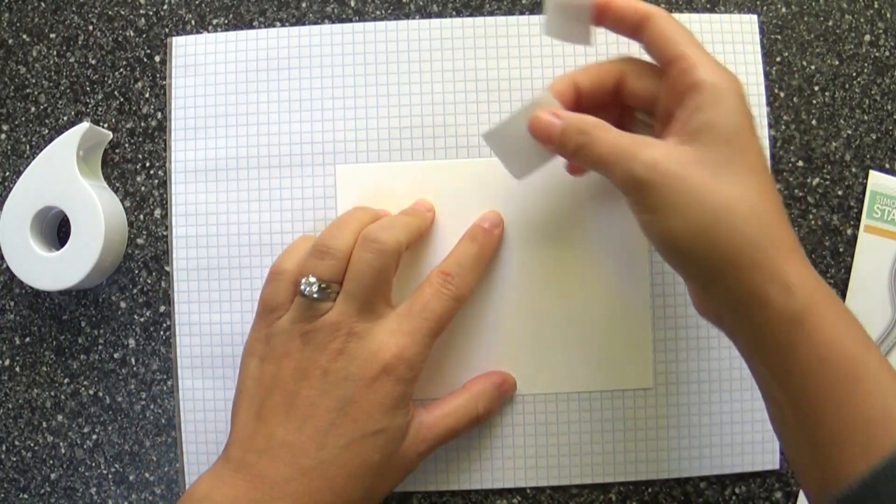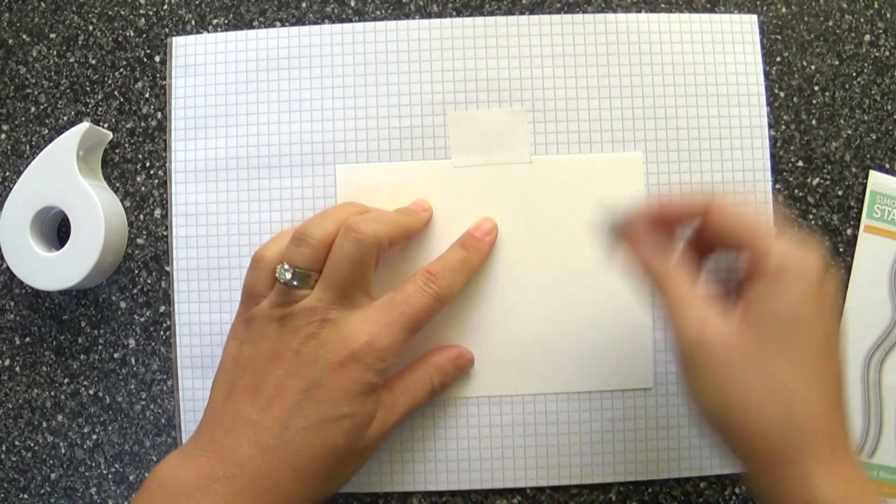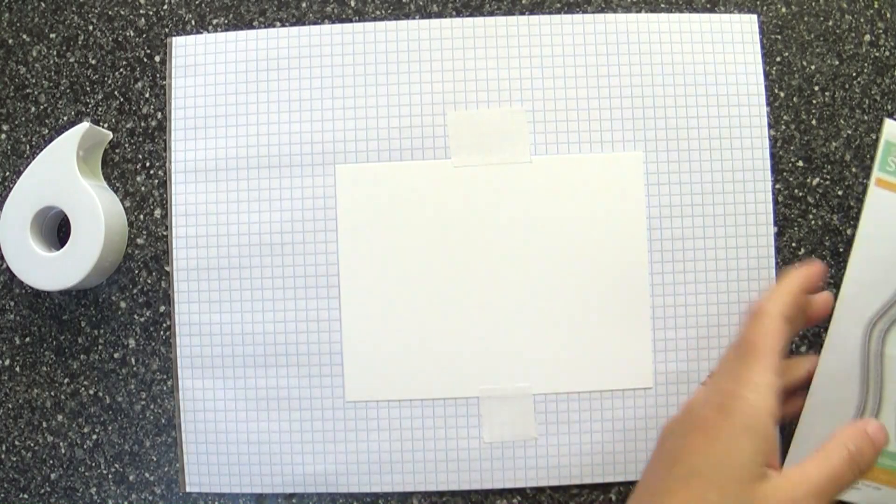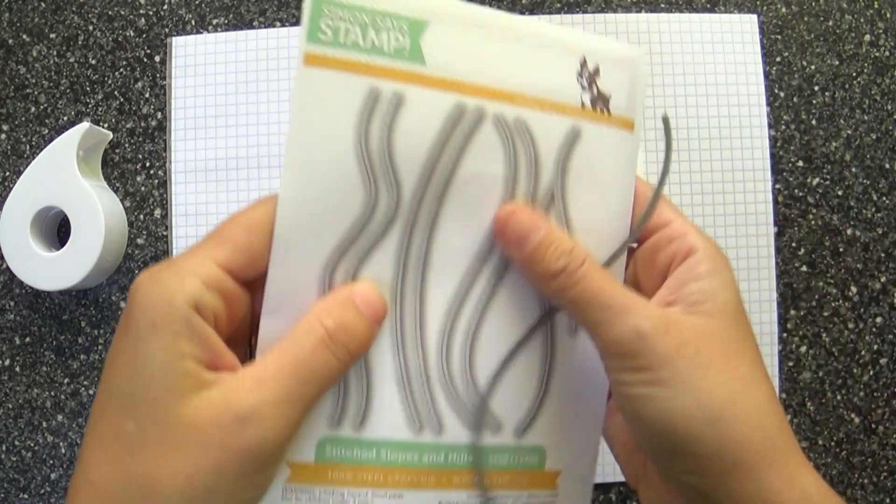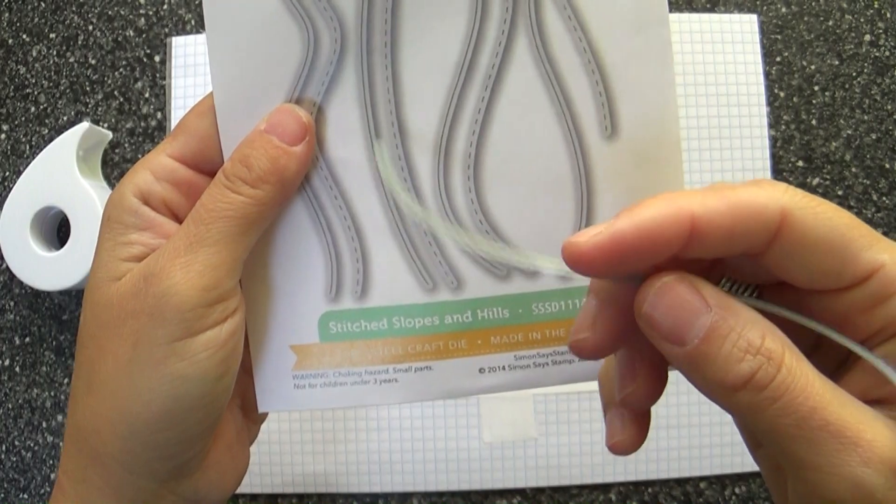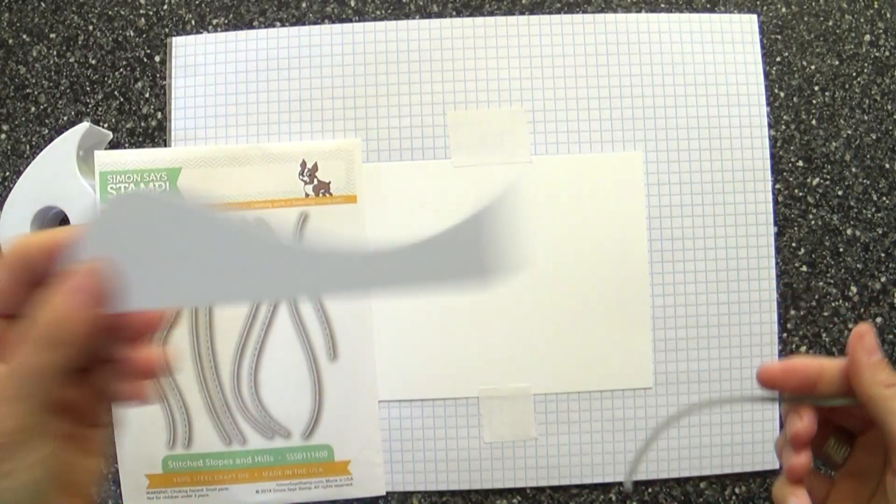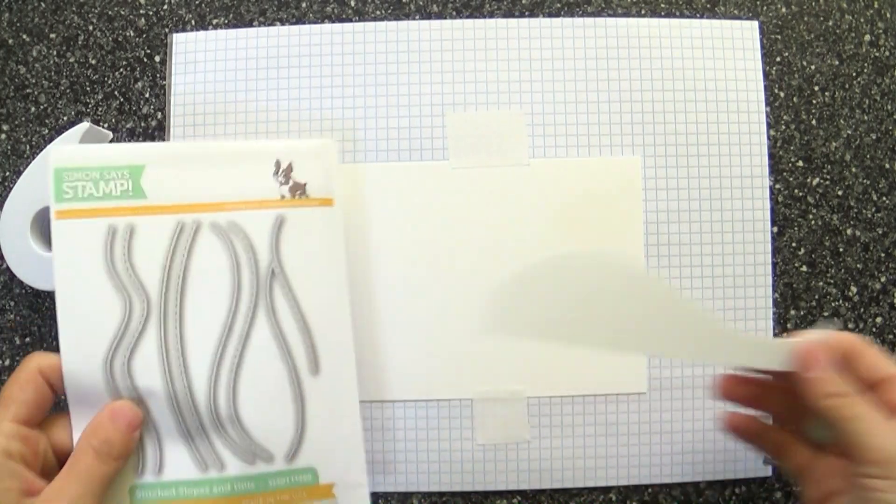I'm starting with a Neenah Solar White panel of cardstock, the 80-pound weight. I've got these little dies called Stitched Slopes and Hills. I'm using the solid hills, not the stitched one, and I've already pre-cut a little snowy hill die cut.